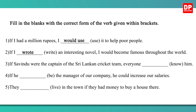Now the third sentence: If Savindu were the captain of the Sri Lankan cricket team, everyone would know him. Now the fourth one: If he blank be the manager of a company, he could increase our salaries. Here again you have the blank in the condition clause. So the answer is: If he were the manager of a company, he could increase our salaries.